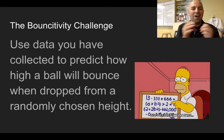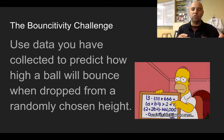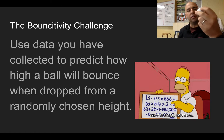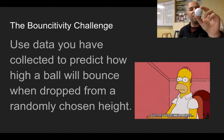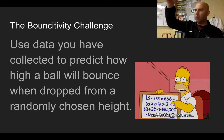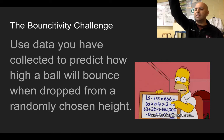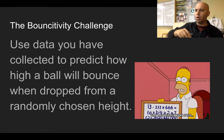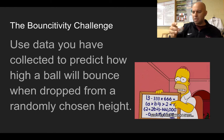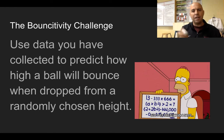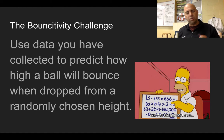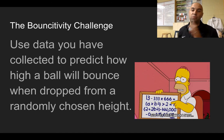So here's the challenge: you're gonna use data that you've collected to predict how high a ball will bounce when dropped from a randomly chosen height. Think about it like this — this is a golf ball. If I take this golf ball, hold it up here and drop it, it bounces. If I hold it at a different height, is it gonna bounce the same height as before? The bounce height might be a little different depending on how high I hold it. So is there a relationship there? That's what you've gotta figure out.